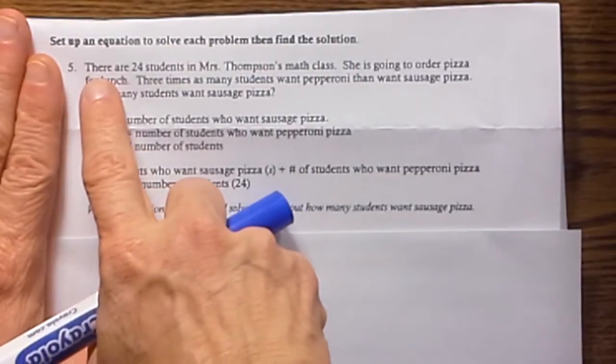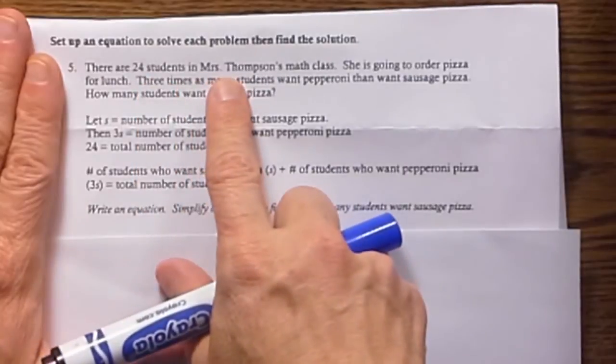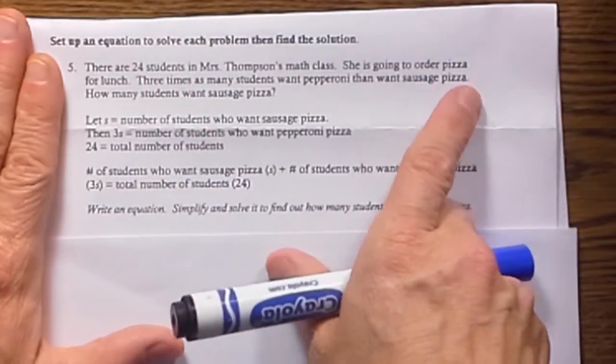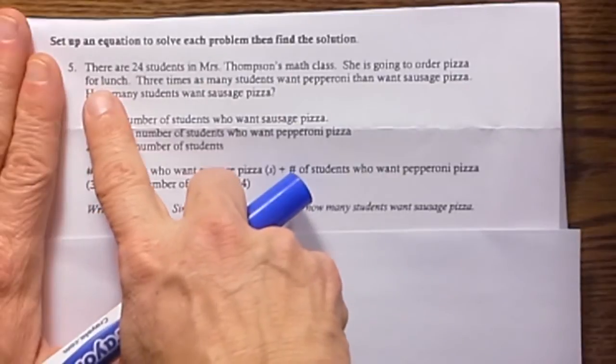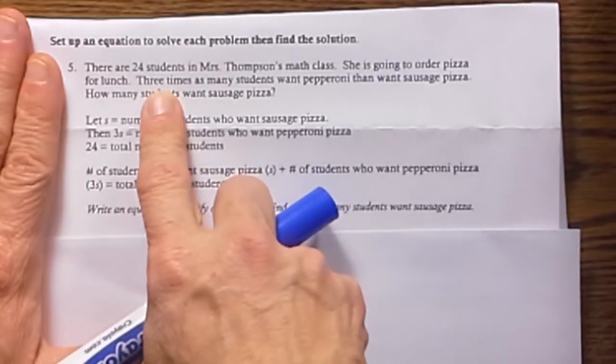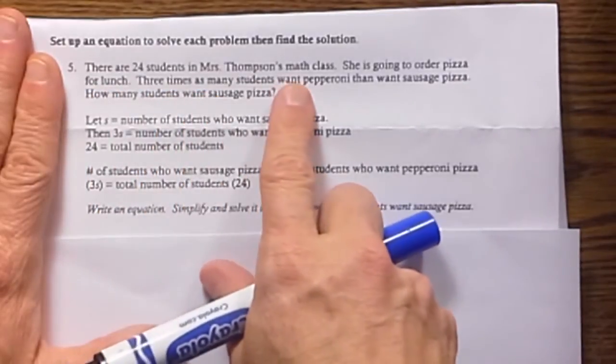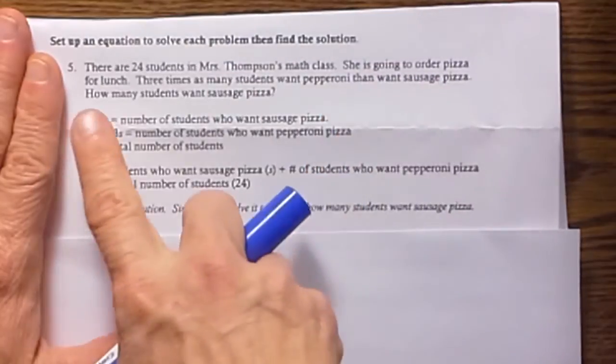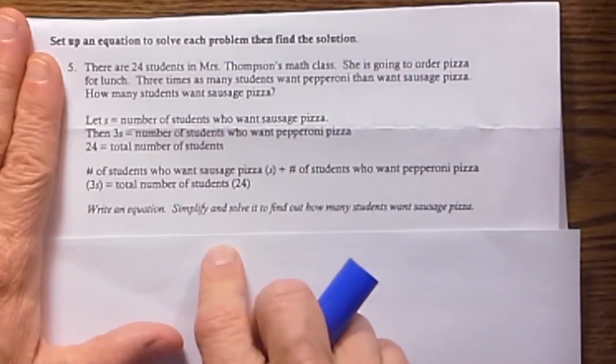This is how it starts off. There are 24 students in Mrs. Thompson's math class. She is going to order pizza for lunch. Three times as many students want pepperoni than want sausage. How many students want sausage pizza?